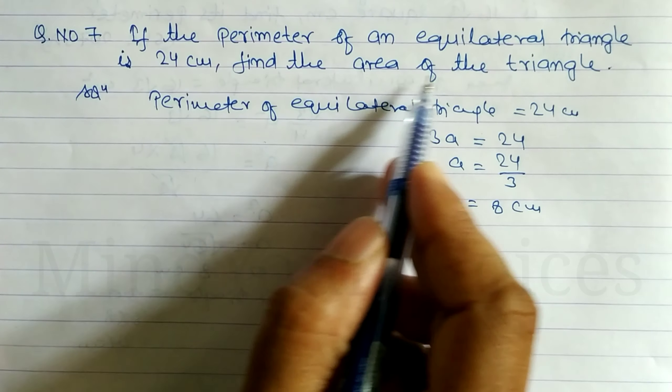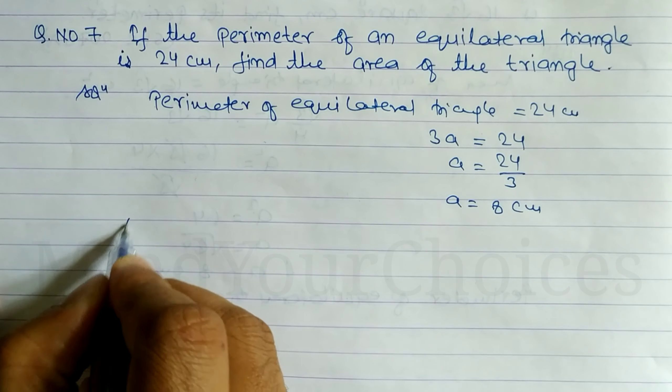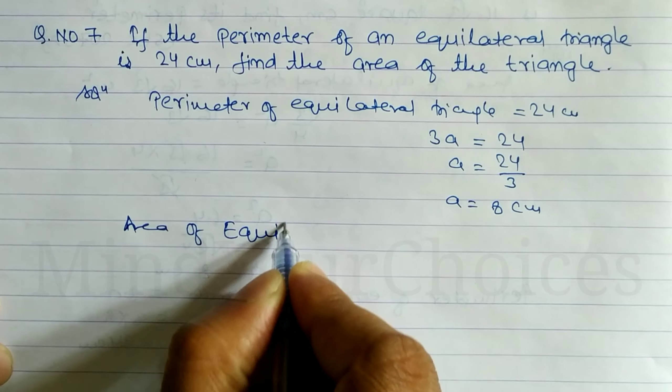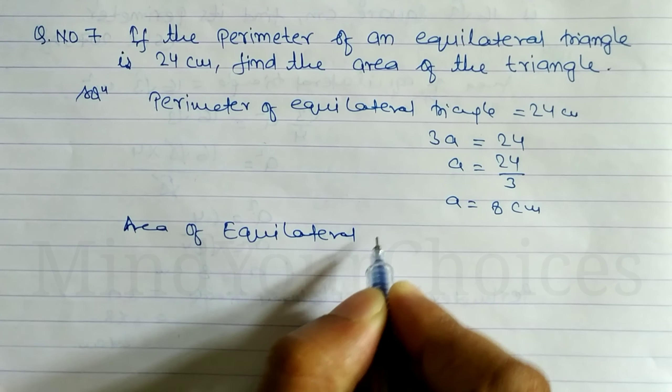After this we have to find out area of equilateral triangle. So area of equilateral triangle formula.